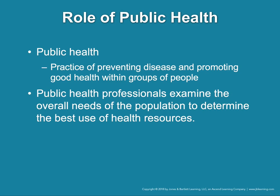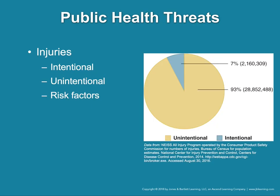Environmental health monitoring and regulation is also an example of a public health strategy. Injuries can be a public health issue — you have intentional or unintentional, with unintentional being much more prevalent. According to the book's data, 93% of injuries in 2014 were unintentional, meaning accidental — they occur without the intent to cause harm. Intentional injuries usually occur in the context of violence, such as self-harm, suicide, intentional overdose, or assault.